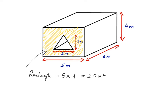Then I need to work out the area of the triangle. The formula for the area of a triangle is base times height divided by 2. The base of this triangle is 3 meters and the height is 2 meters, so the area of this triangle is 3 times 2 divided by 2, which equals 3 square meters.